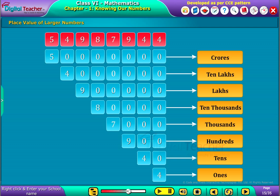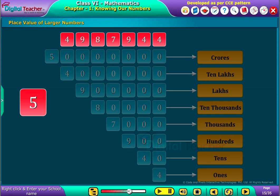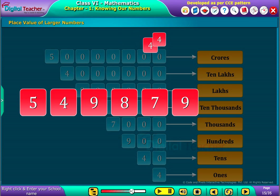Now it can be read as 5 crores, 49 lakhs, 87 thousands, 944.